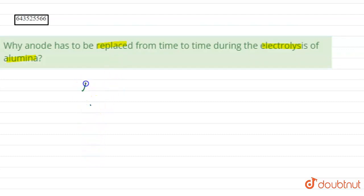So basically, alumina has formula Al2O3. During the electrolysis of alumina,